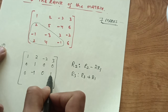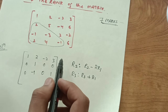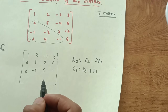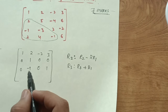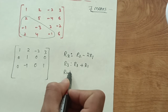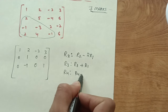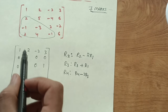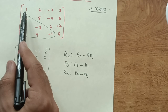Now I do the transformation on row 4: R4 → R4 - 2×R1. So 2 - 2×1 = 0 for the first entry, making it zero. Then 4 - 2×2 = 0 for the second entry.